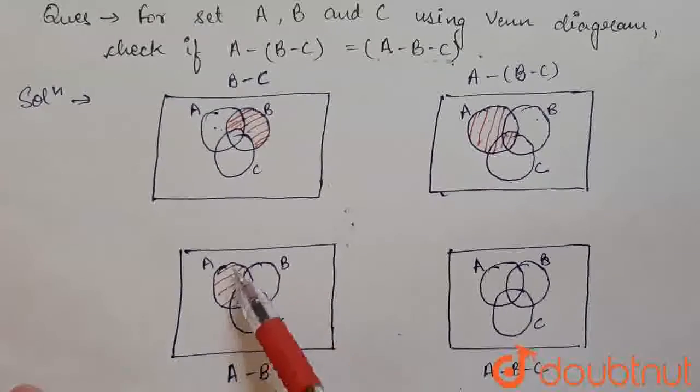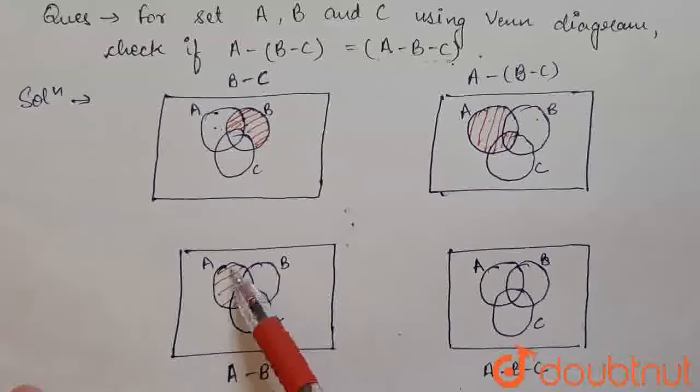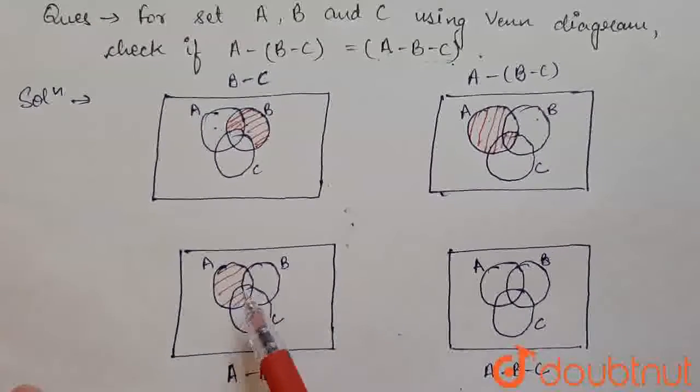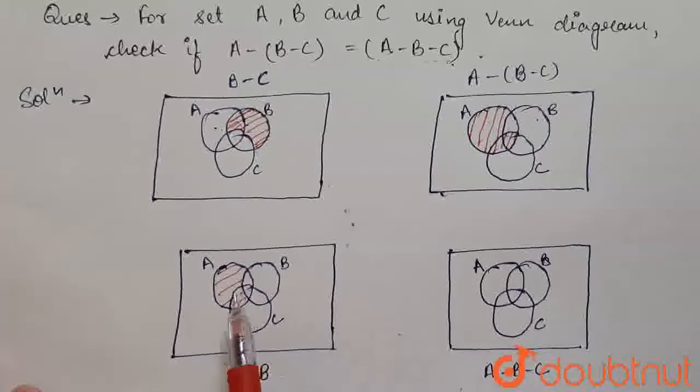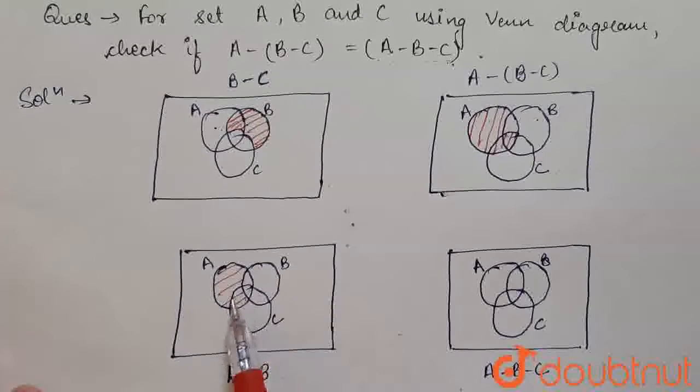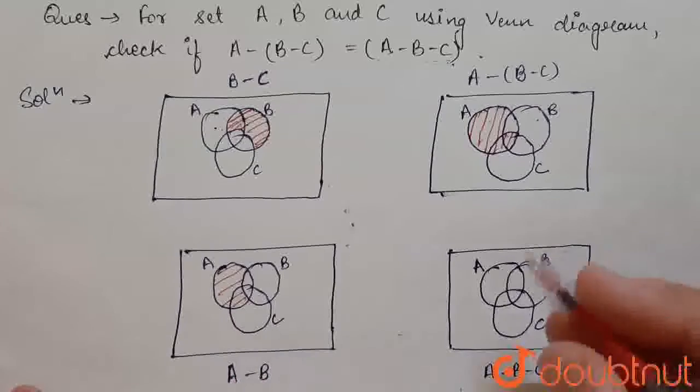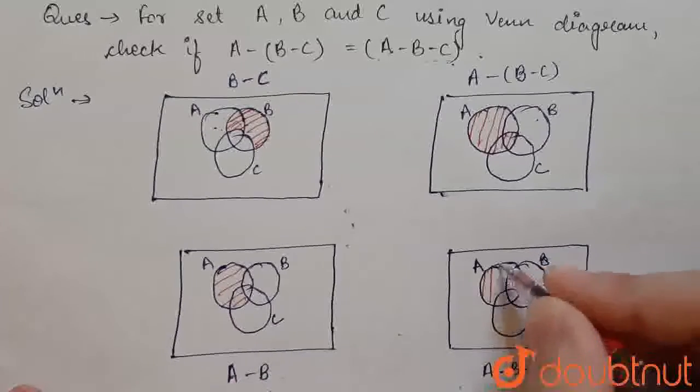So, A minus B is this. And from this, we have to subtract C. We have to subtract this part that is present in C. So, what will be left to us? This part only.